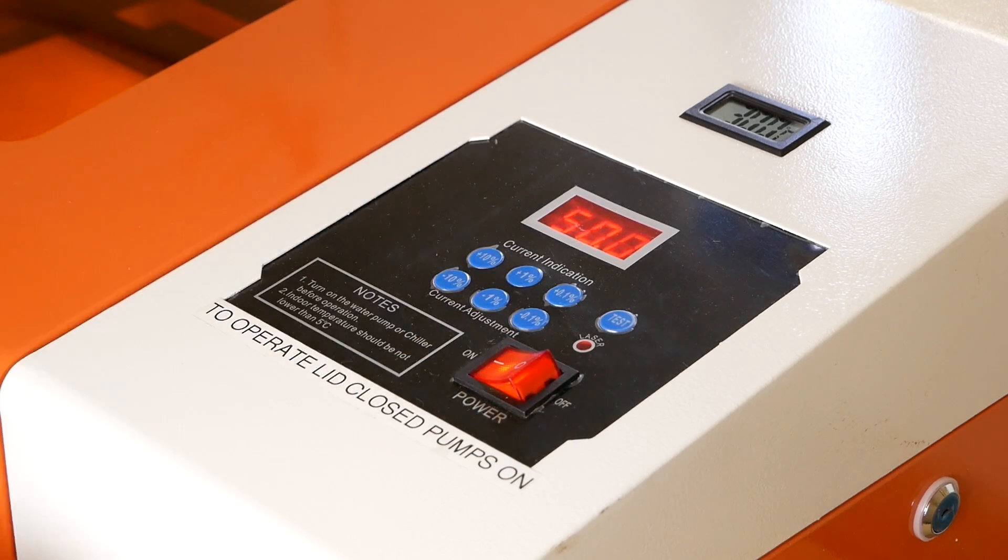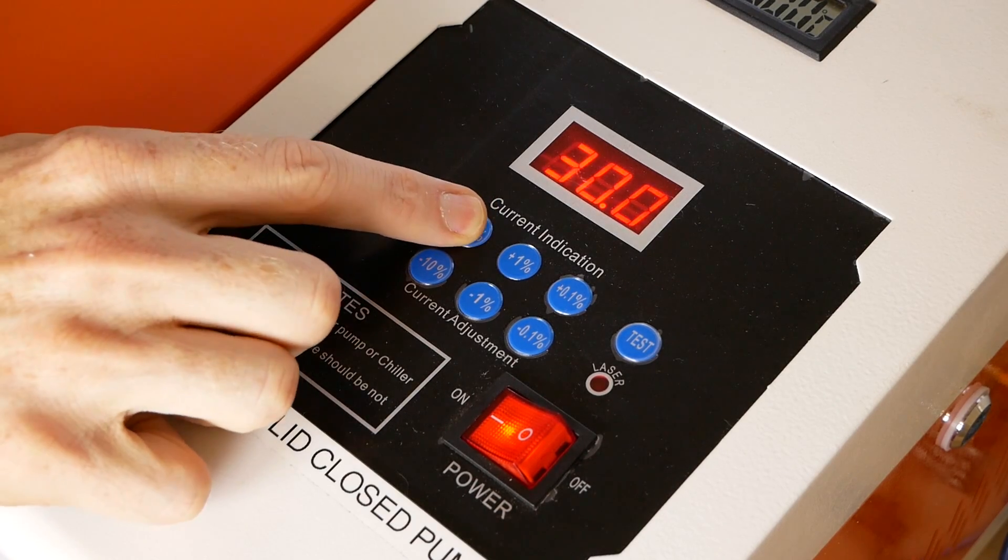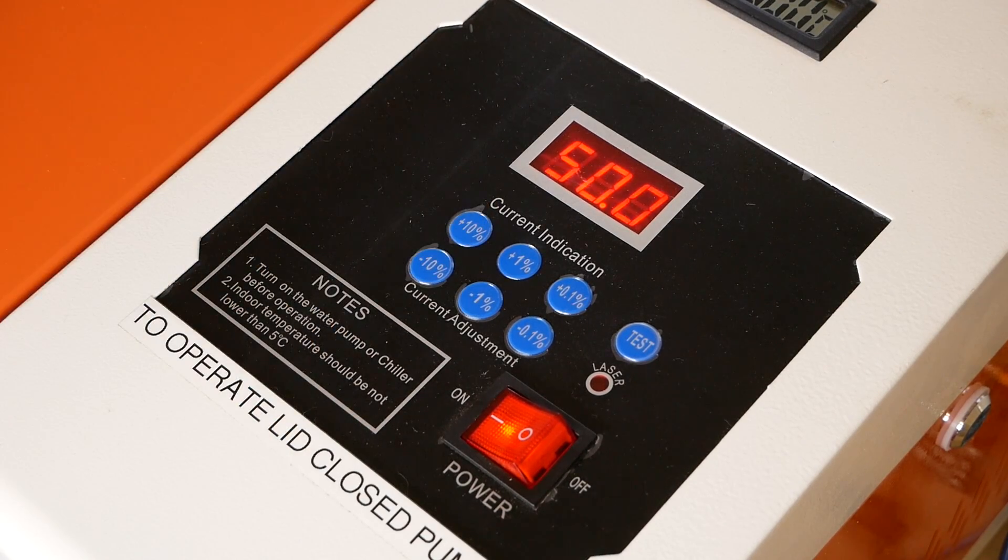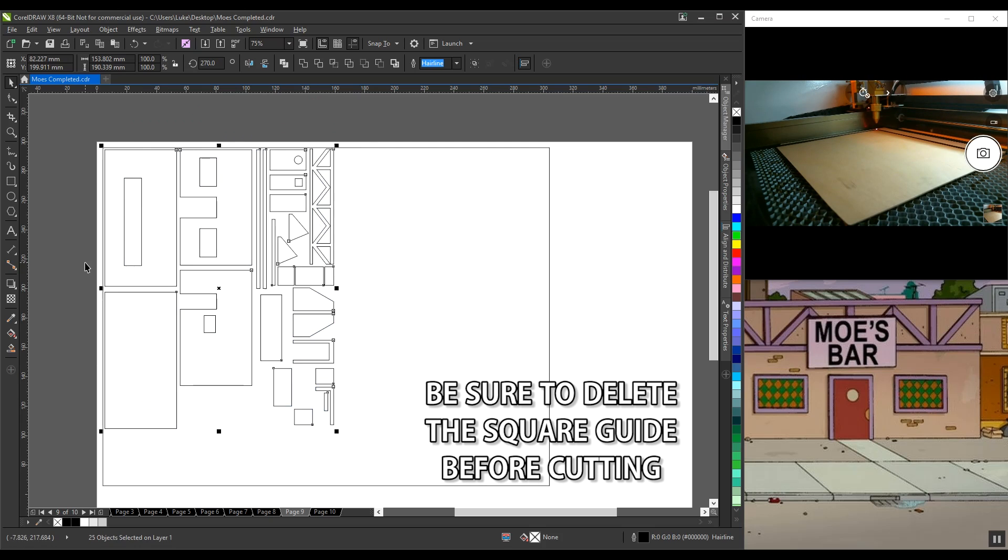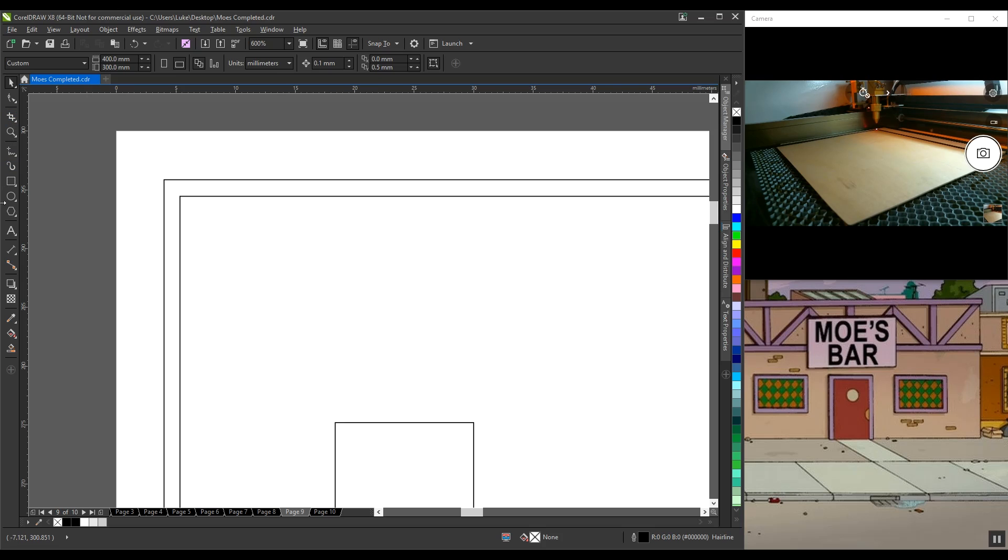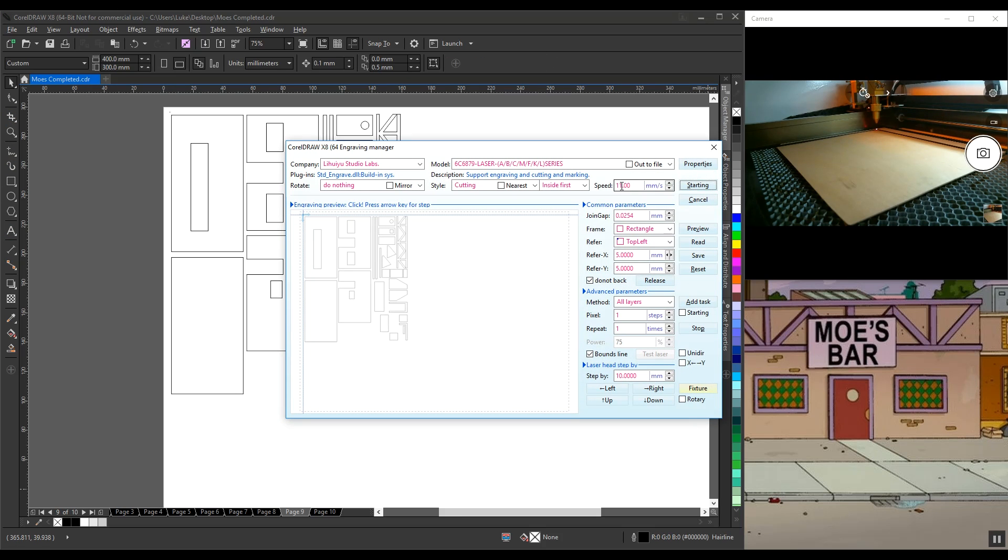Now we can power up the laser and set the power of the laser beam. Using a low power setting will help prolong the life of the laser. The large square shows the size of the material I've placed in the laser cutter. As long as the drawings fit inside this area, they will be cut from the material inside the laser cutter. I make sure to double check the settings and I can now begin cutting.